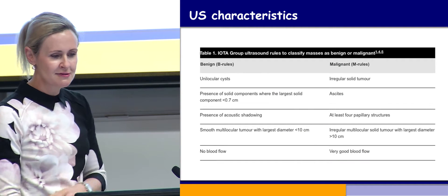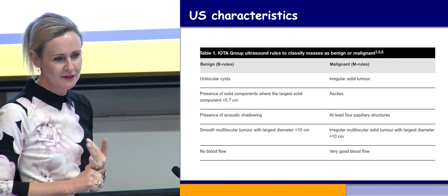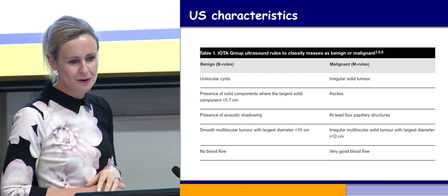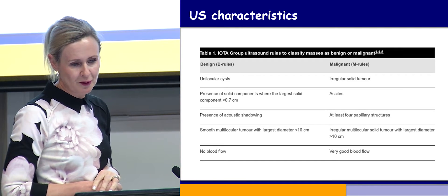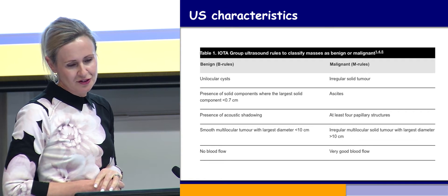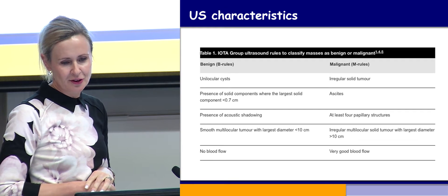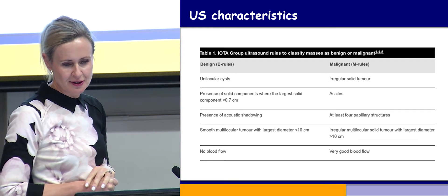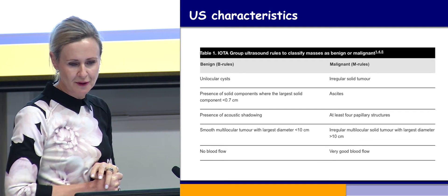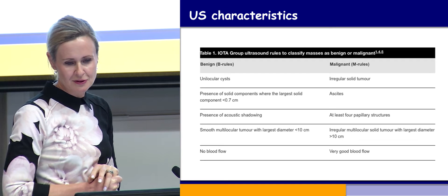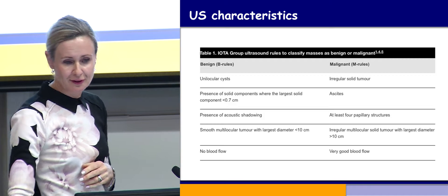Looking at the characteristics of benign versus malignant cysts: benign cysts are generally unilocular, any solid components are very small, you can get shadowing within them, and they are less than 10 centimetres in diameter with no blood flow. Whereas malignant tumours are irregular with solid areas, often associated with ascites, will often have papillary structures, the irregular multilocular solid tumour is often bigger than 10 centimetres, and they have good blood flow.